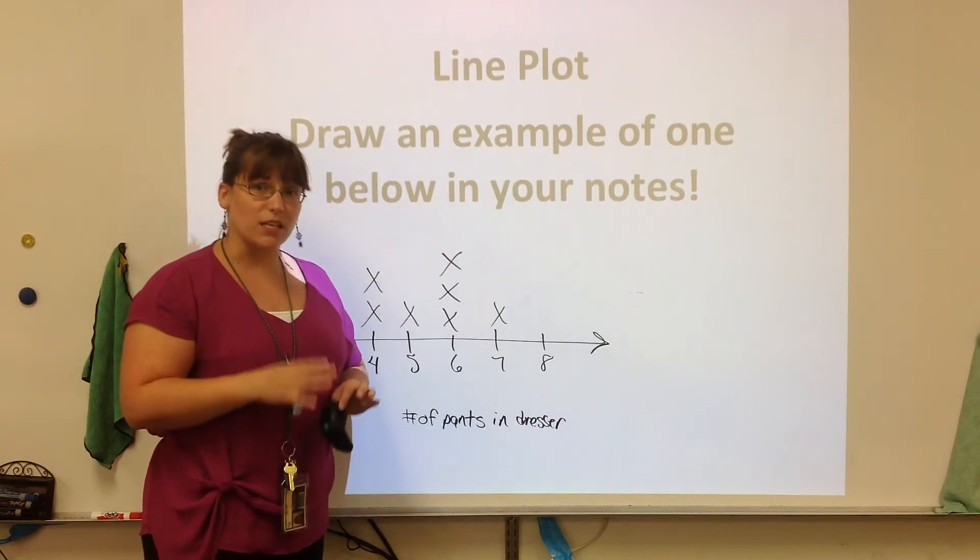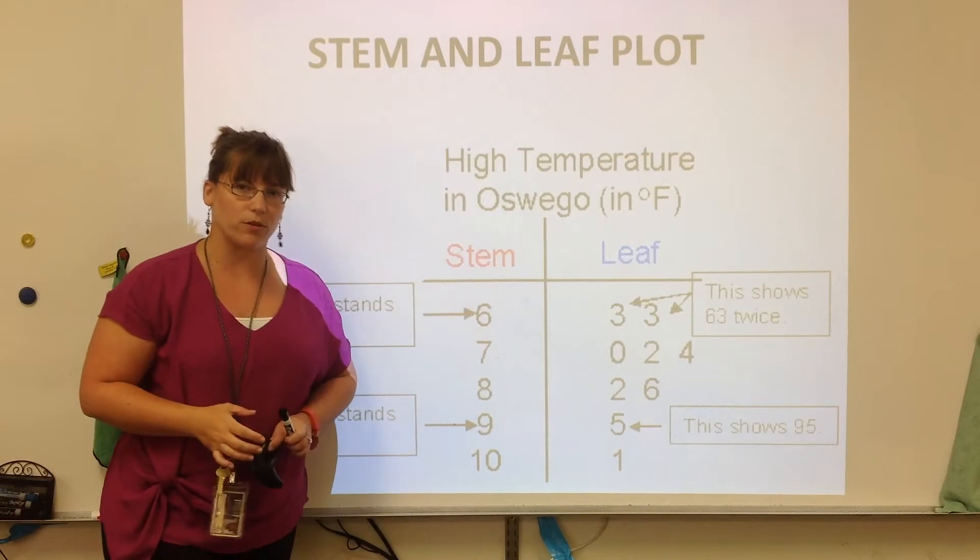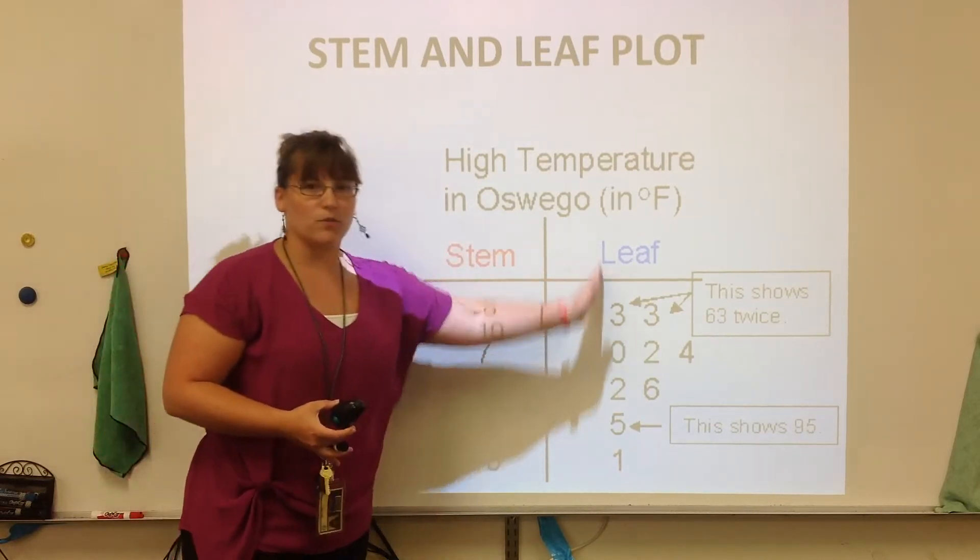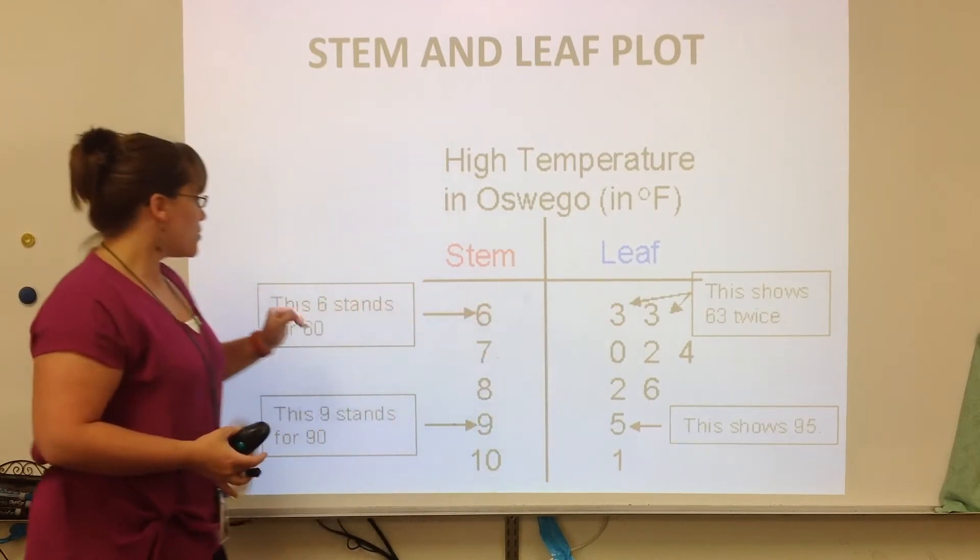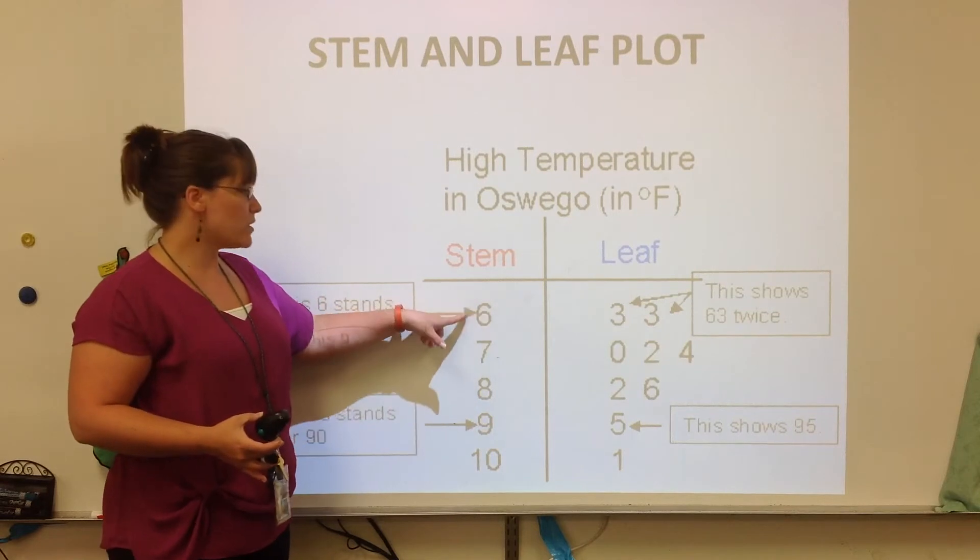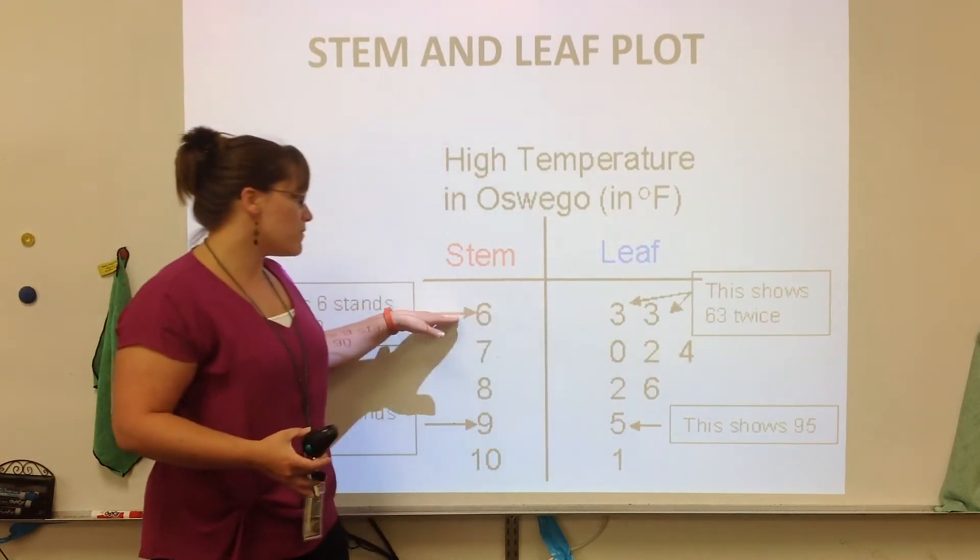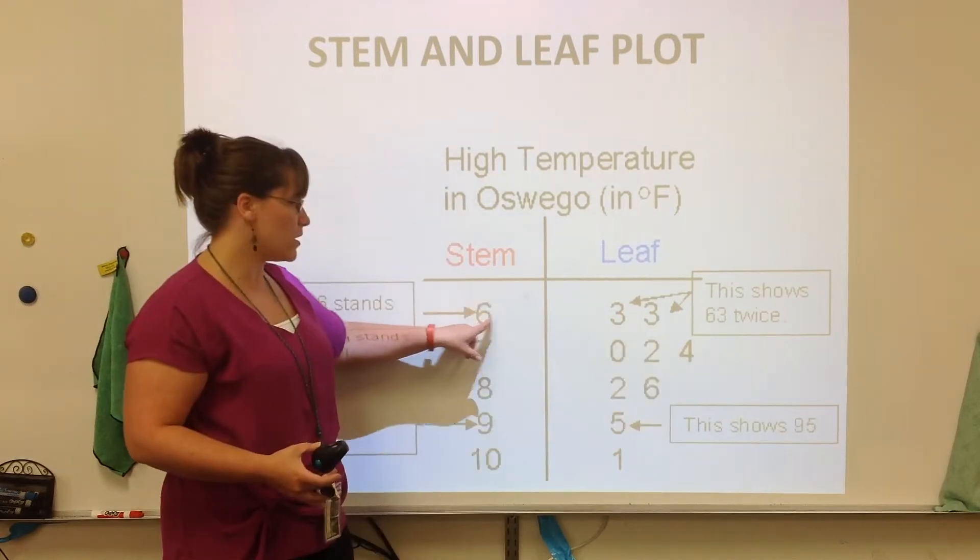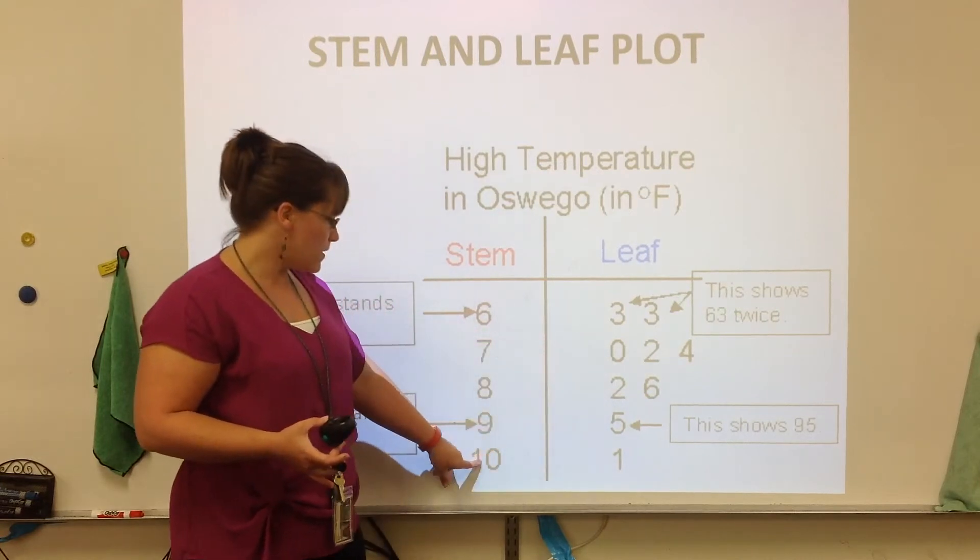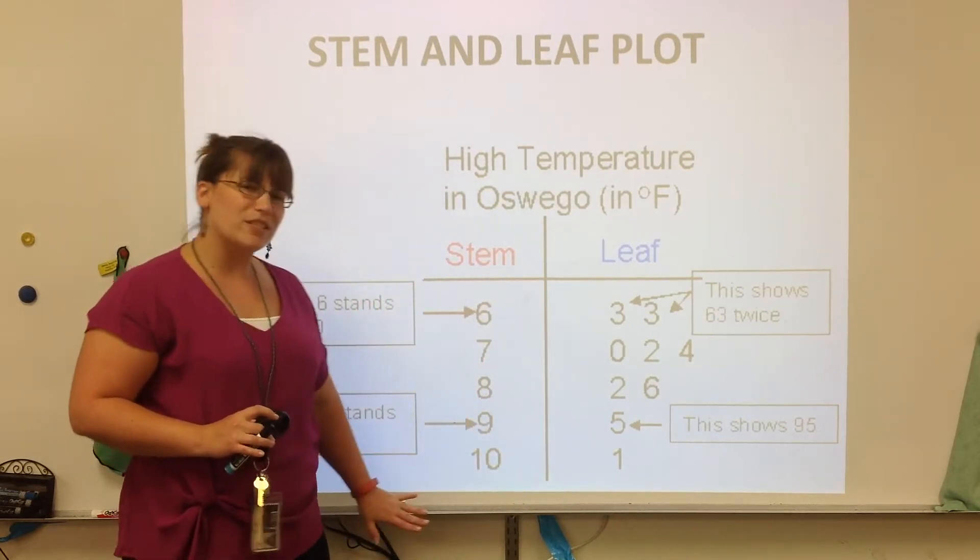We are going to be focusing on this in class, but I do want to teach you about another type of graph, and it's called a stem and leaf plot. Stem and leaf plots are a different way of showing information. And this example deals with the high temperature in Oswego. And you see that there are two columns. One are our stems, and the others are our leaves. So each row basically is a place value. This could either be tens or hundreds. So this six actually stands for 60. This nine stands for 90. The leaf end, these are the ones. This six goes with this three to put the number 63 together. This eight goes with the two to be 82 degrees. This ten goes with the one, and this means 101 degrees was one day in Oswego.